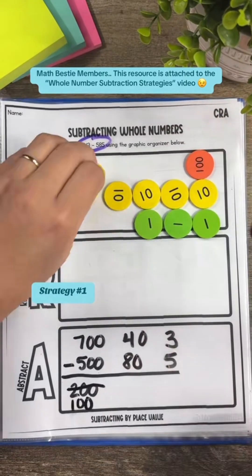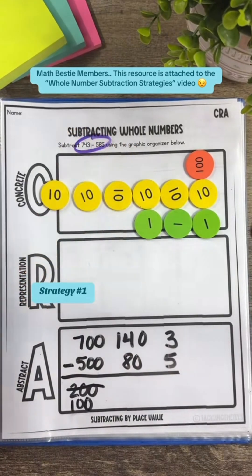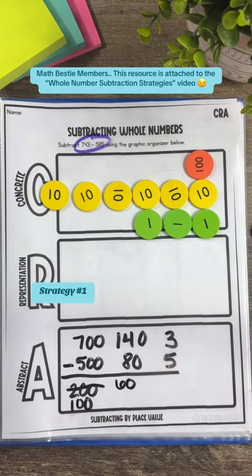In order to subtract that 80, I broke a bar of 100 and turned it into 10 tens and now I have 14 tens to subtract from to get 60.